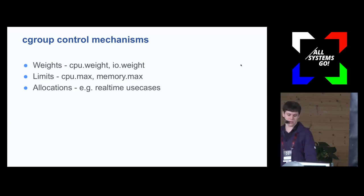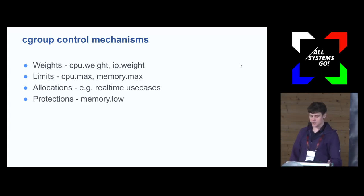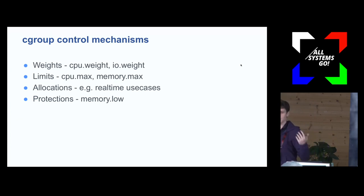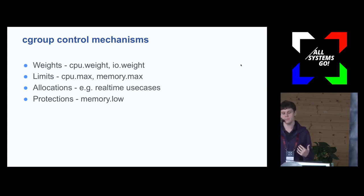Allocations are about reserving resources exclusively for a single purpose — mostly useful in real-time use cases; we don't use this much at Facebook. Protections are the last category, such as memory.low. When you start hitting memory contention, the kernel looks for what memory can be reclaimed. memory.low allows us to protect a cgroup's memory from reclaim: if you are under, say, four gigs, you will not have your memory reclaimed — we'll prefer other cgroups to give up memory.